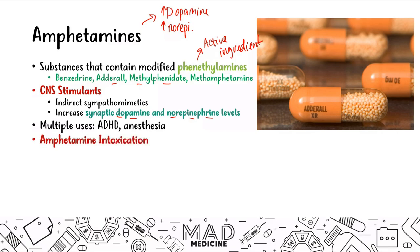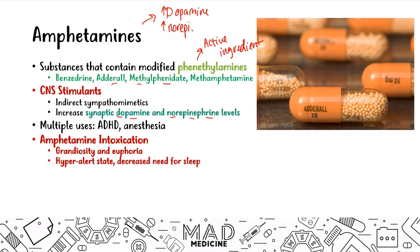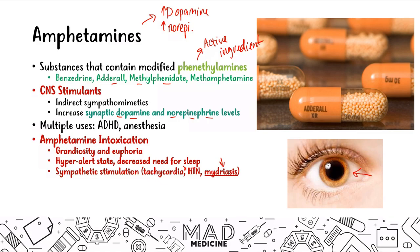When it comes to intoxication, the main symptoms you will see in patients with amphetamine intoxication are grandiosity and euphoria — they're going to feel great. They're going to be in a hyperalert state with a decreased need for sleep. They'll also have sympathetic stimulation: tachycardia, hypertension, and mydriasis — pupillary dilation. This is completely opposite of opioids, where intoxication causes pupillary constriction.